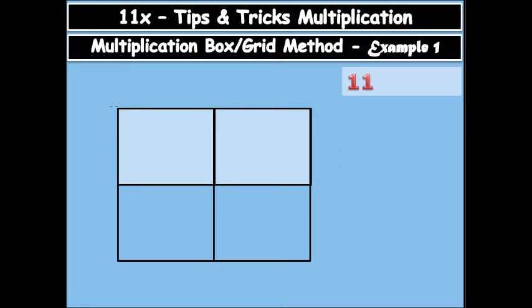We have 11 times 17. So now you can see from the board, on top of the box or rows you write 10 plus 1, that is 11. And then on your left hand side you write 10 plus 7, that is 17.